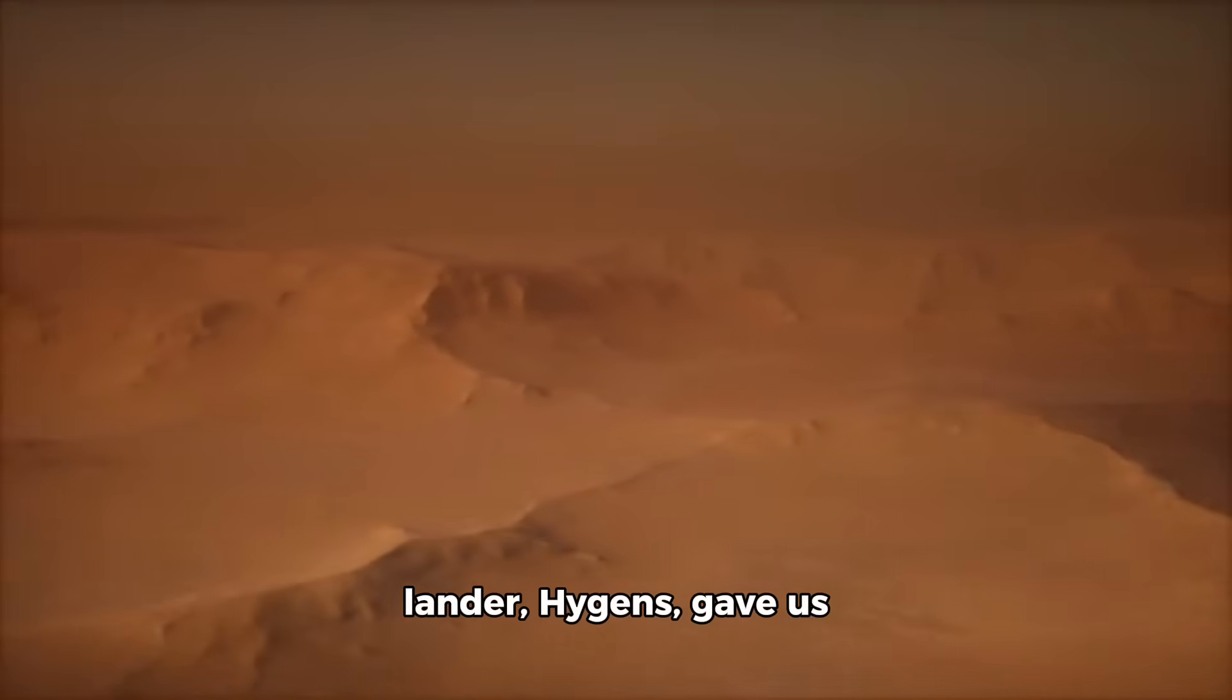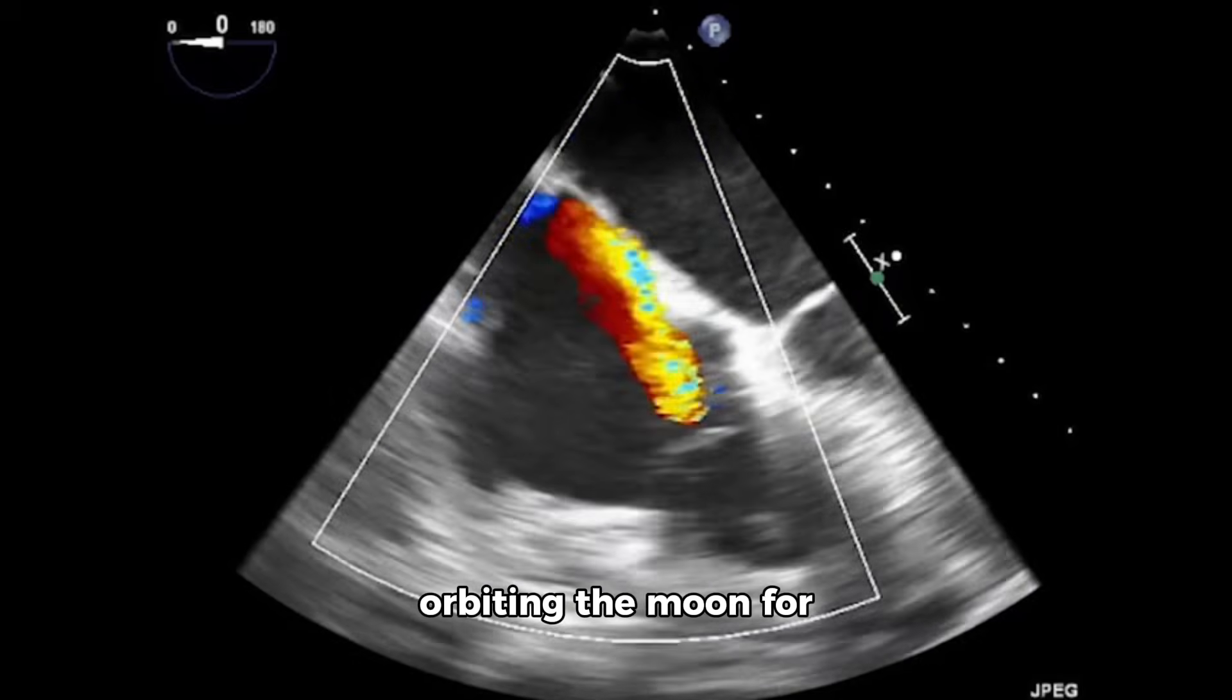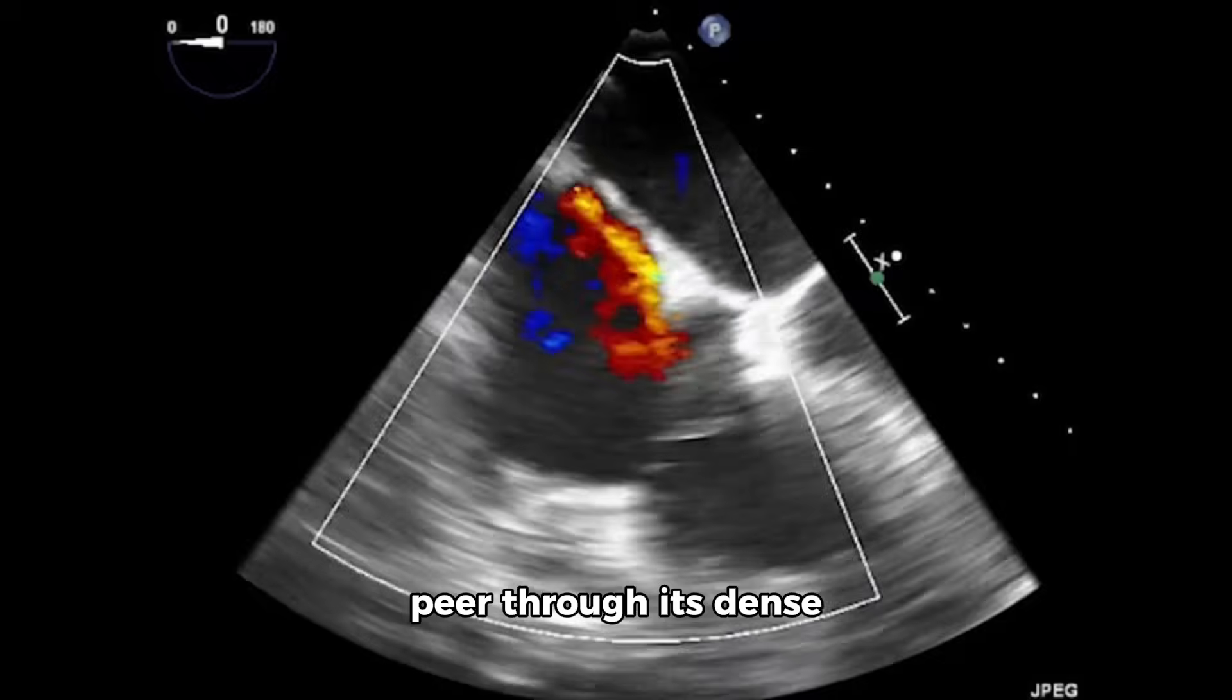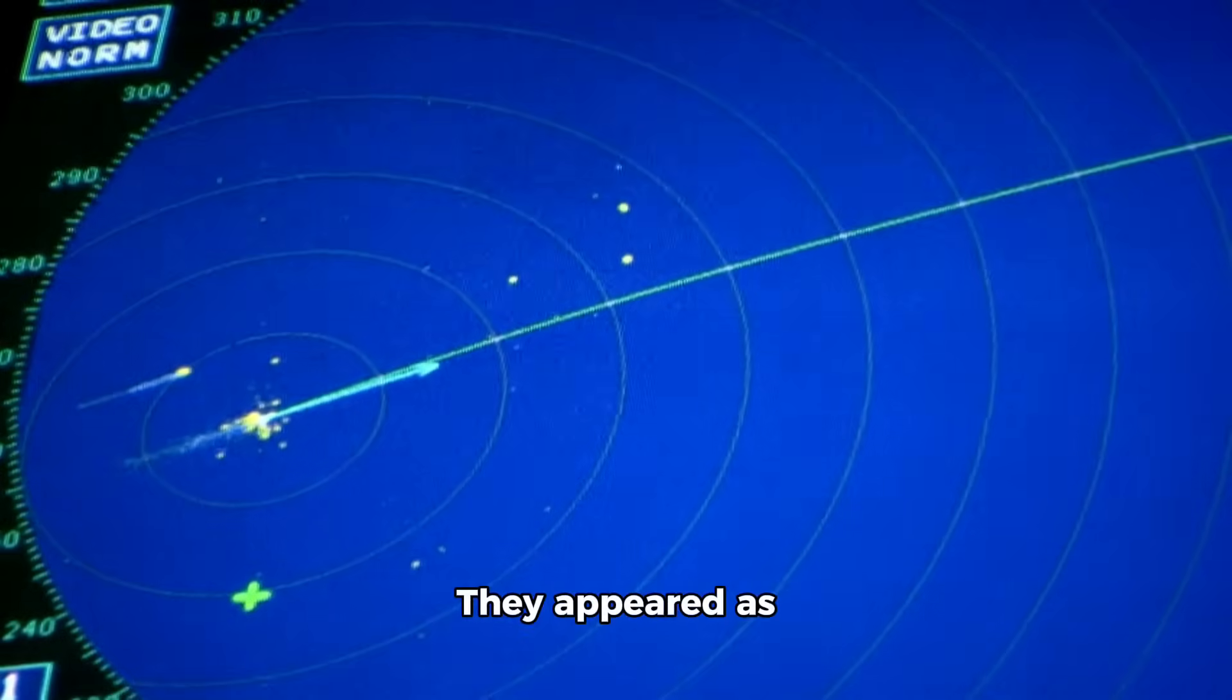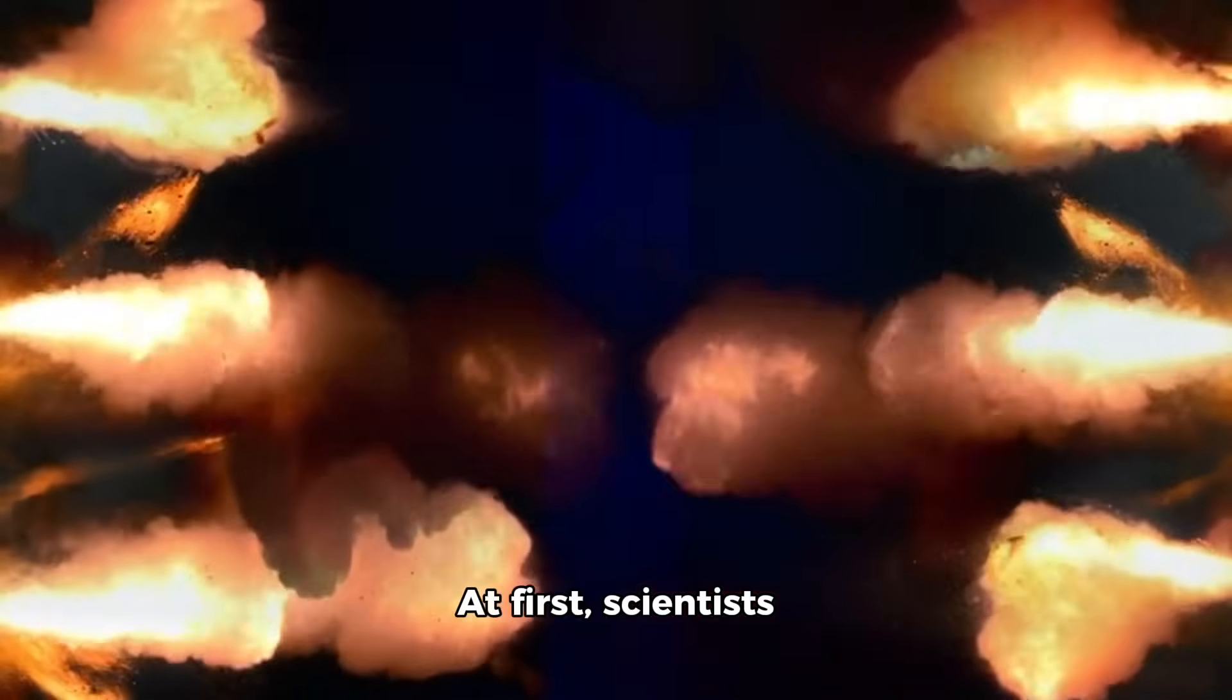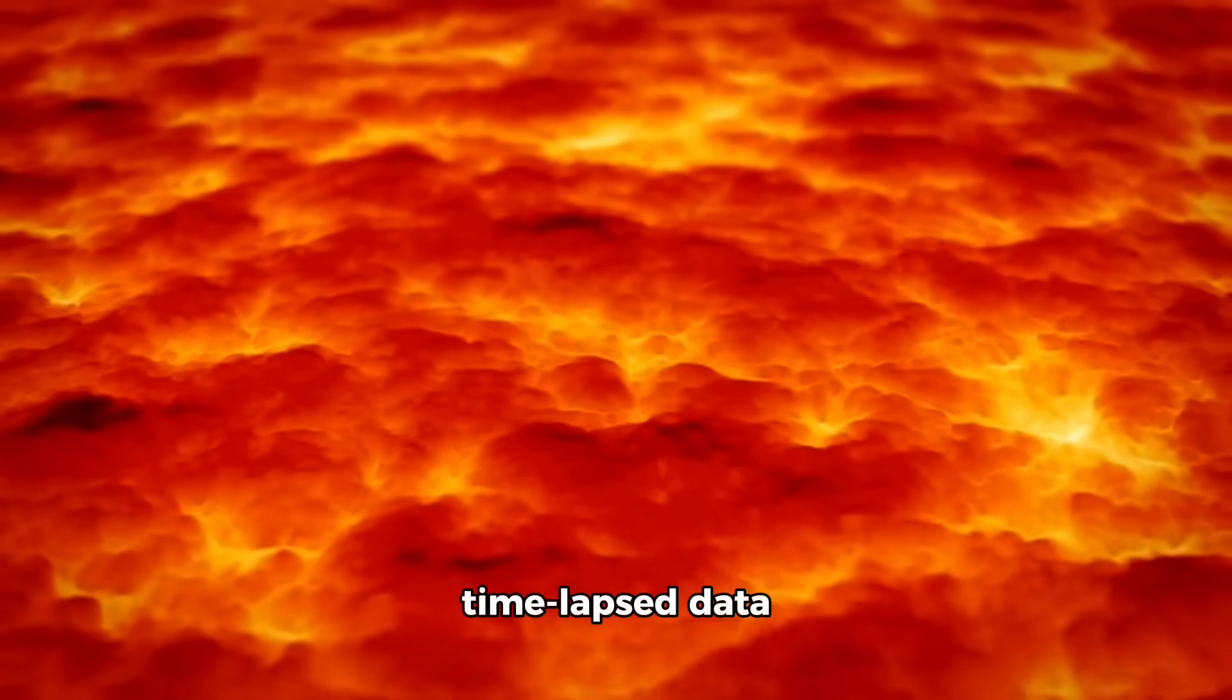Cassini's companion lander, Huygens, gave us the first glimpse of Titan's alien landscape. But Cassini continued orbiting the moon for years, using radar and infrared instruments to peer through its dense orange atmosphere. What it found was haunting. Beneath the methane haze were dark seas, jagged ridges, and massive dune fields. But in 2014, during a deep radar pass over Titan's southern hemisphere, something strange emerged—moving shadows. They appeared as silhouettes in the radar maps, shifting slowly across the surface. At first, scientists believed these were transient methane clouds, but a review of time-lapse data revealed something chilling.